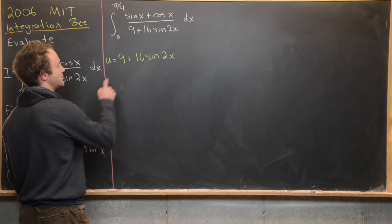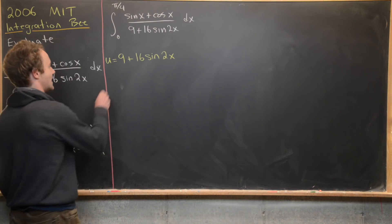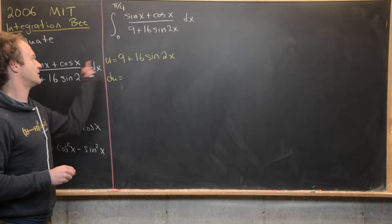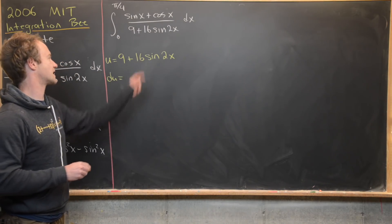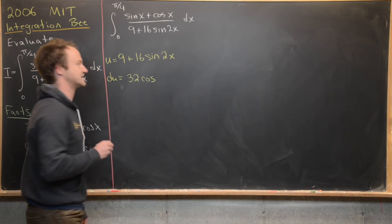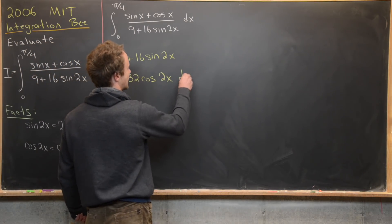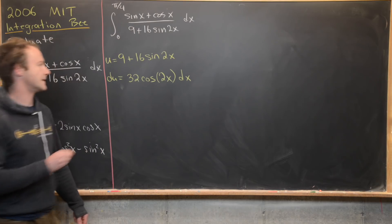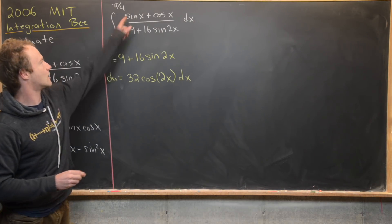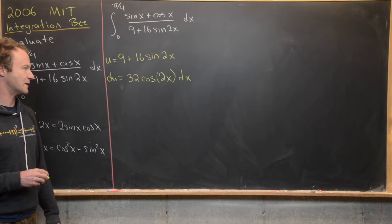Let's calculate the derivative because we'll need a du component if u is the denominator. So du is going to be — the derivative of 9 is 0 — a 2 comes out and we'll have 32 times cosine of 2x dx, since the derivative of sine is cosine. But notice this is not at all what we have in the numerator, so this is not super helpful at the moment.